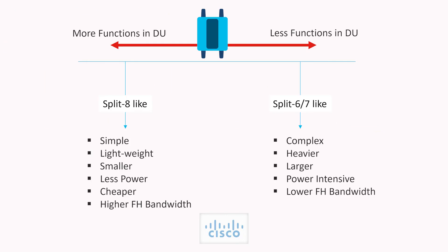There are two directions one can take from here based on end-user requirements. One: continue to keep the RU as simple and lightweight as possible, saving size, weight, power and real estate at the cell site — but the catch is that fronthaul bandwidth becomes high, increasing optics and fiber costs and power usage. The other route is adding more functions to the RU, making it heavier, costlier and more power-hungry, but reducing the fronthaul bandwidth.